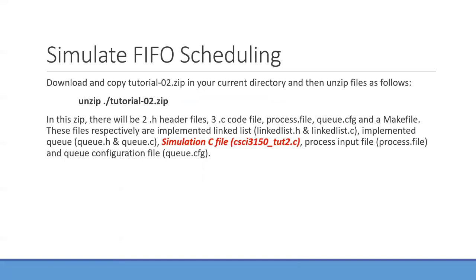Now we go to the second part: utilizing the program to simulate FIFO scheduling. You can download the source code from Blackboard. In the provided files, there is the linked list implementation with its header and source code, the Queue implementation with its header and source code, and the simulation file used to simulate FIFO scheduling. We also have two input files: the process configuration and the queue configuration.